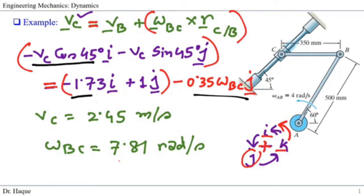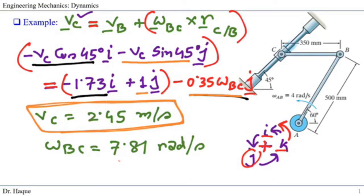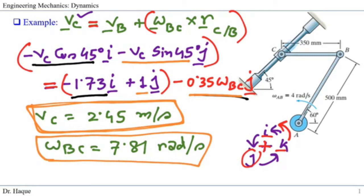Separating I and J components gives two equations. From the I components: −VC cos 45° = −1.73, which gives VC = 2.45 meters per second. From the J components: VC sin 45° = 1 − 0.35 omega_BC, which gives omega_BC = 7.81 radians per second. If you have further questions, please comment and I will answer. The next video will solve more problems.